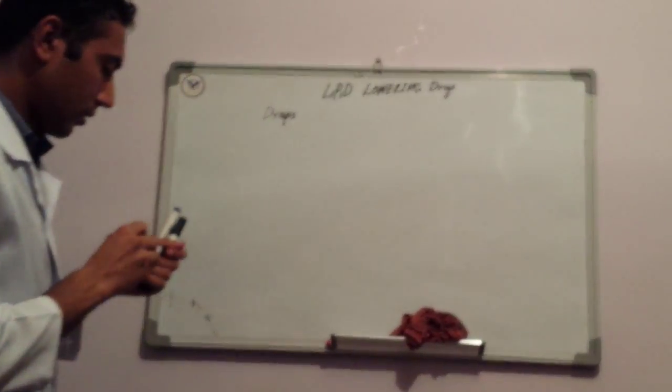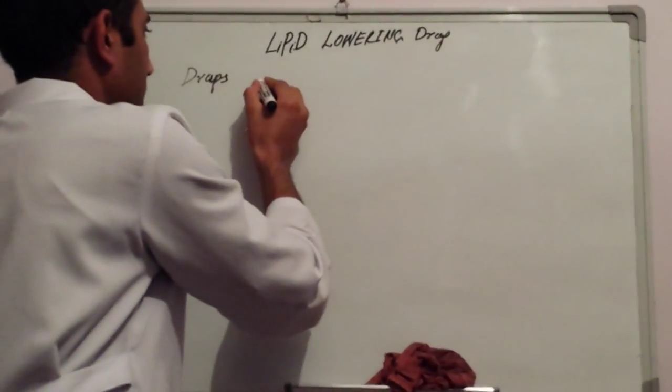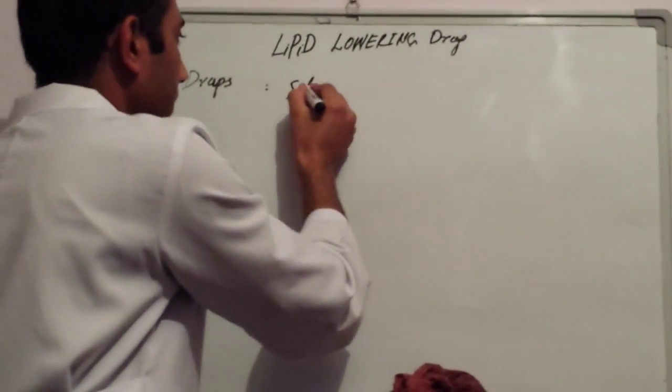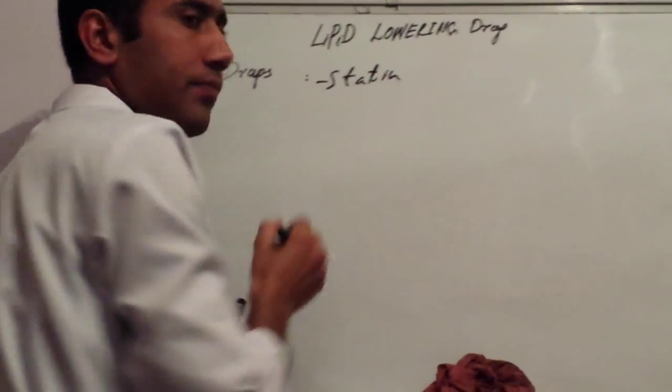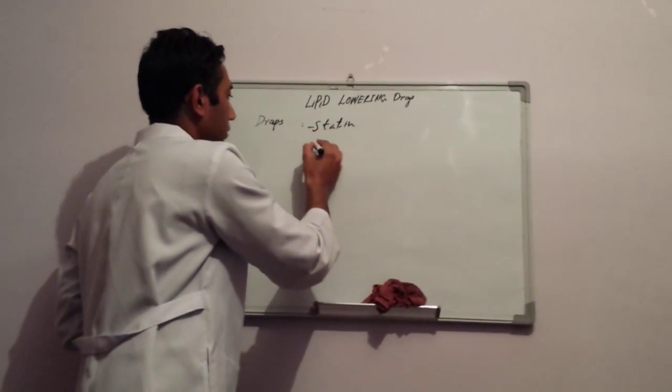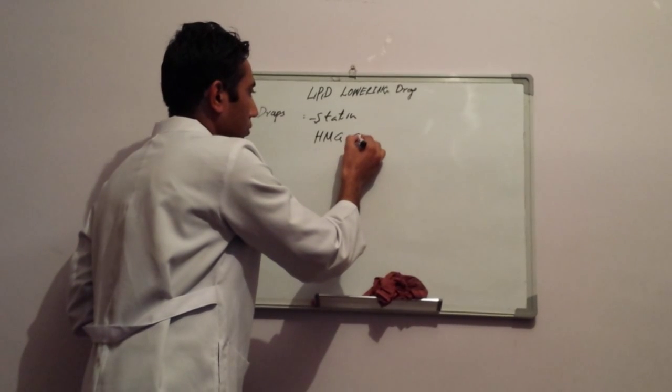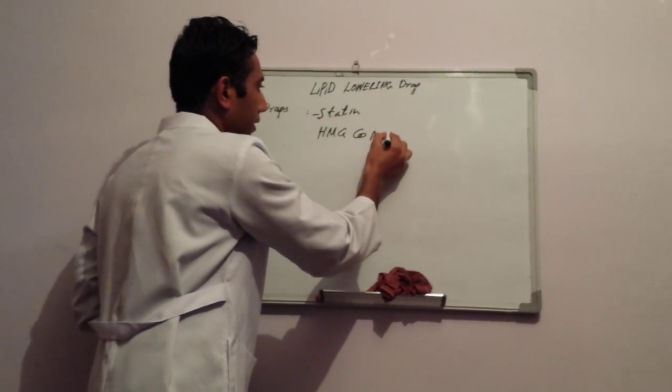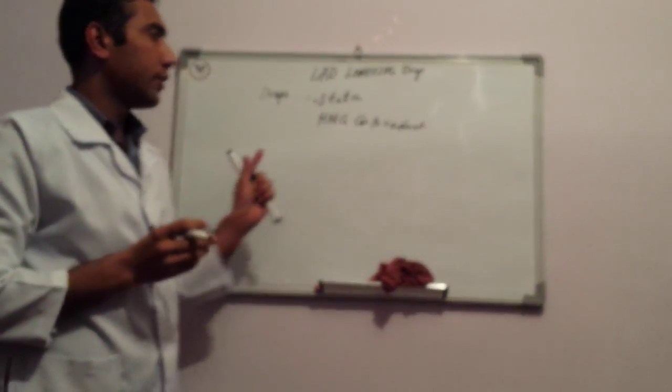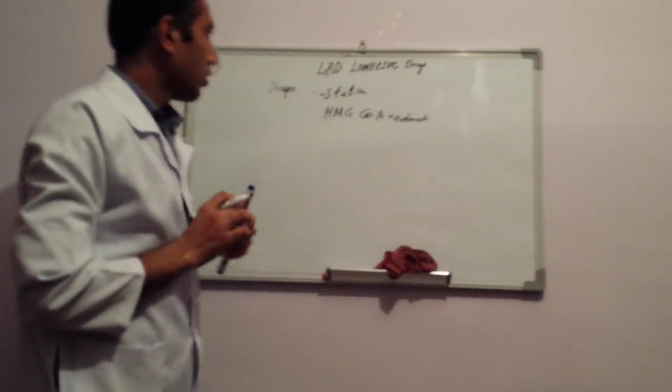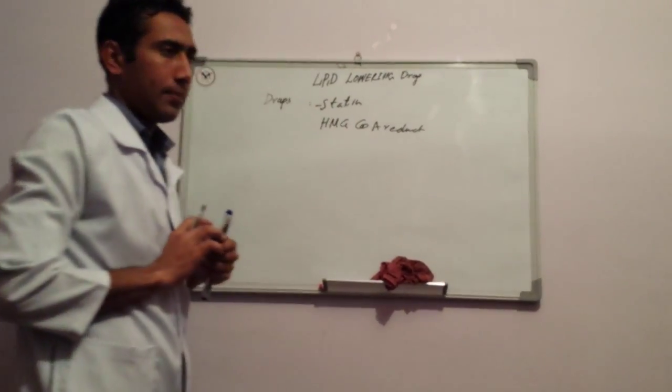This is the first group. They call it the statin family and their name is HMG CoA reductase. HMG CoA reductase family. And this group is statin.